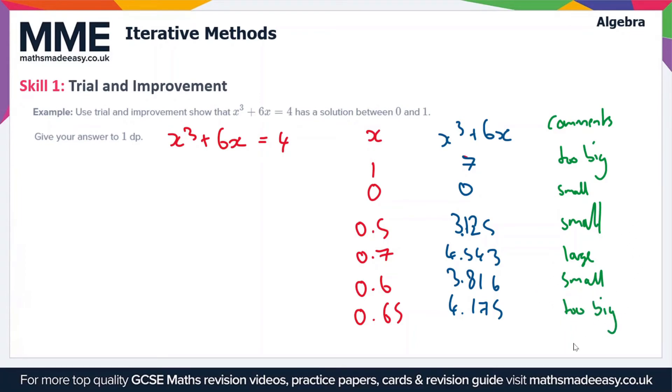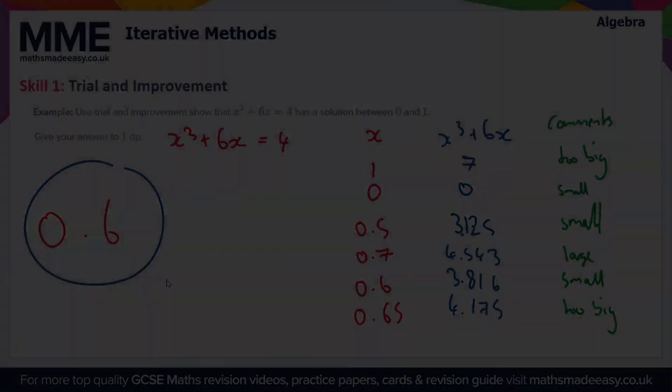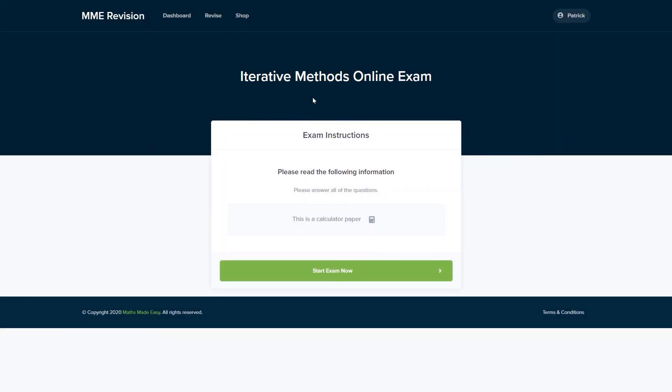So at this point we can establish that the solution is going to be closer to 0.6, because 0.65 gives us an answer which is too big, and this is halfway between 0.6 and 0.7. So our solution is going to be 0.6 to one decimal place. It can take a bit of practice to get good at this topic.